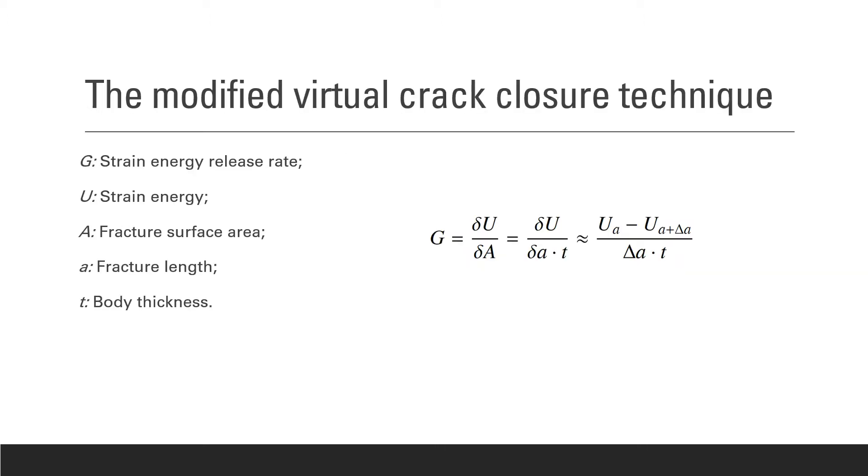So now I'm going to give a refresh on what is the Modified Virtual Crack Closure Technique or MVCCT. The MVCCT is a procedure used to determine the stress intensity factor based on the calculation of the strain energy release rate. By definition, the strain energy release rate, denoted by the letter G, is the decrease in strain energy, denoted by the letter U, per increase in fracture surface area, denoted by the letter A.